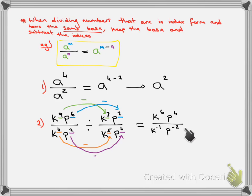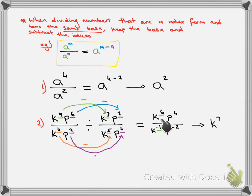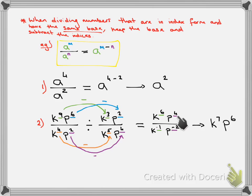Now we simplify the whole fraction further. On top we have k to the power of 6 and p to the power of 4; on the bottom k to the power of negative 1 and p to the power of negative 2. For k: 6 minus negative 1 gives us k to the power of 7. For p: 4 minus negative 2 — two negatives make a plus — gives us p to the power of 6. So our final answer is k to the power of 7 times p to the power of 6.